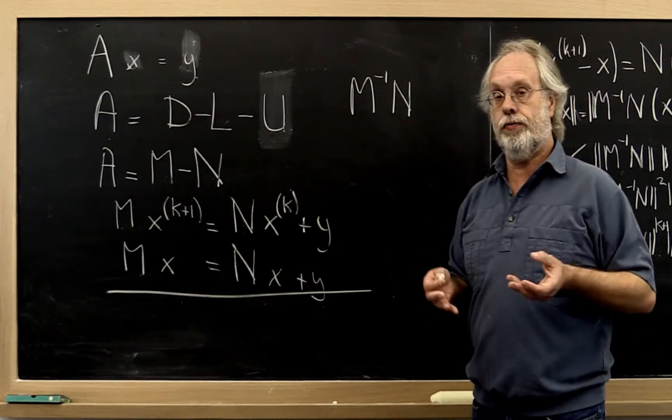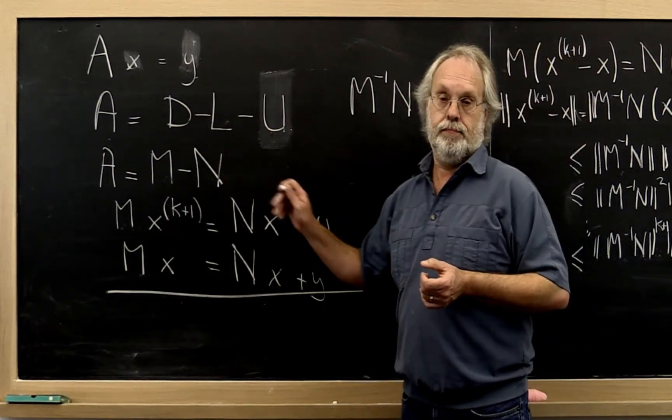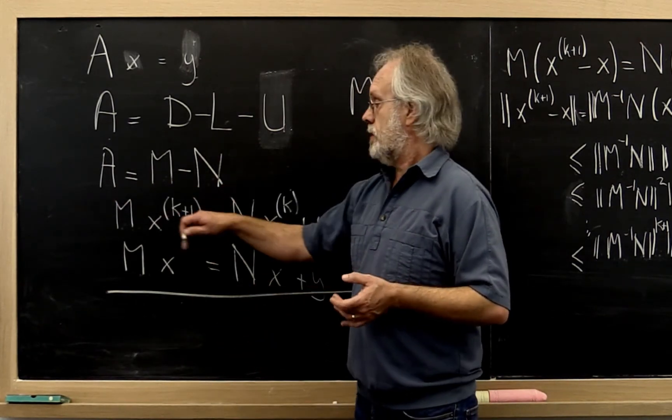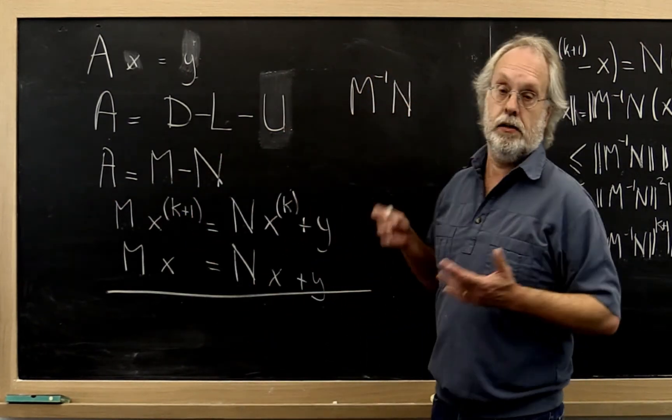That's the kind of thing you look for in a good splitting. The matrix M that resembles A, and as a result hopefully M inverse N small.